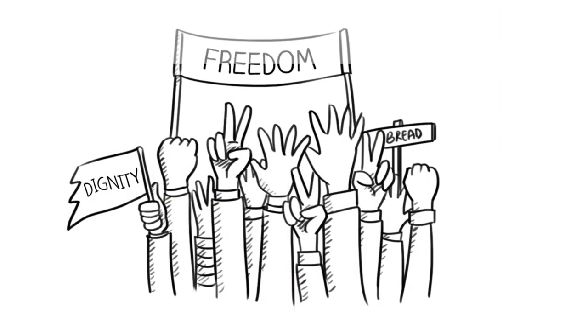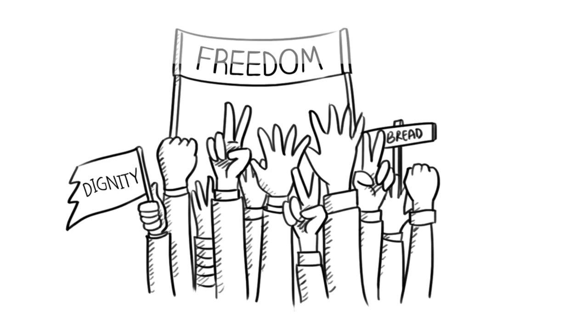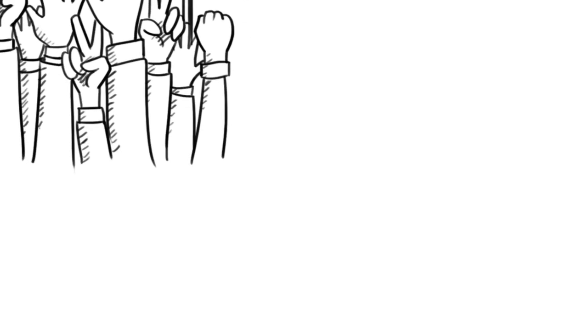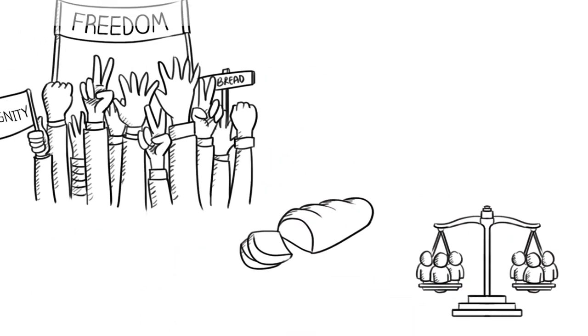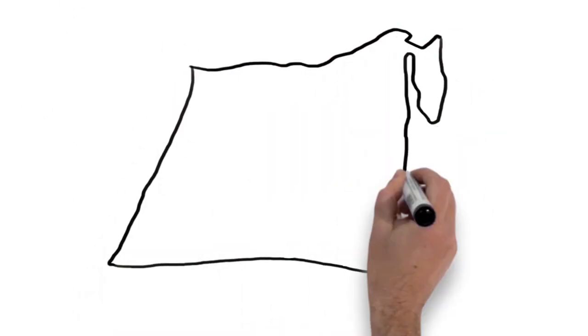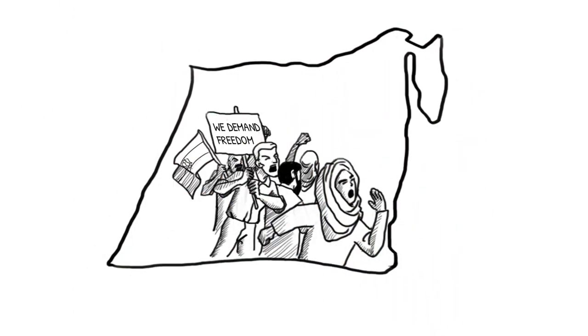On January 25, 2011, tens of thousands of Egyptians took to Tahrir Square, demanding bread, freedom, and social justice. Protests spread across Egypt, and millions demanded the fall of the regime.